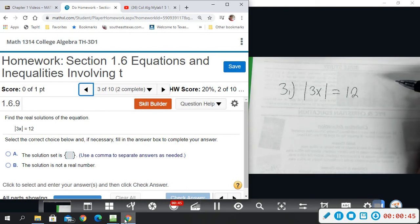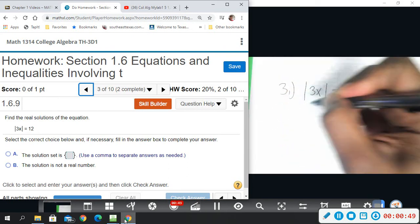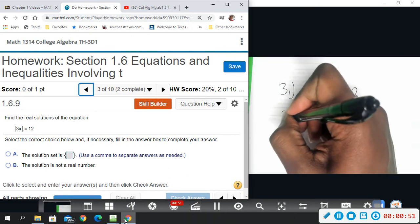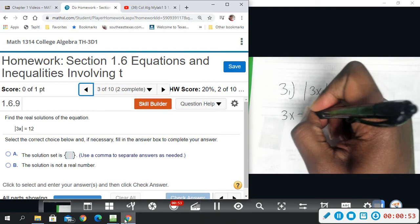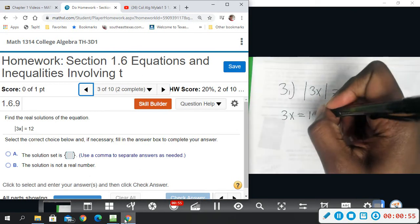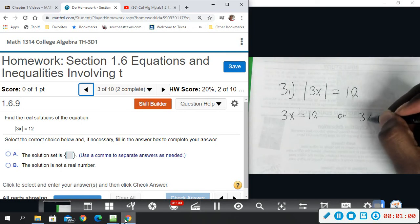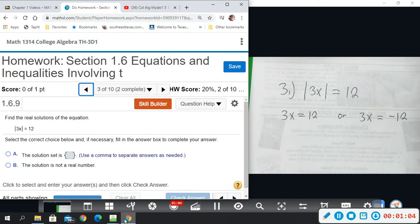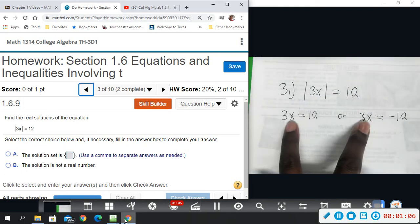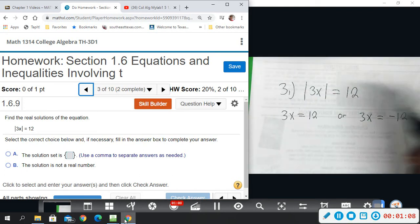It's similar to square root because you could get a positive or negative. So when you solve these, we say 3x, we set it equal to 12. And then we also have this other case, we have 3x, we set it equal to negative 12. So you do that after you remove the absolute values.